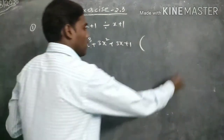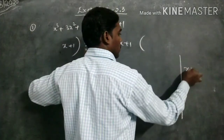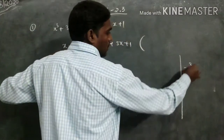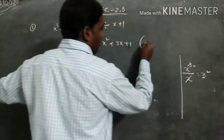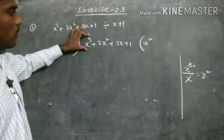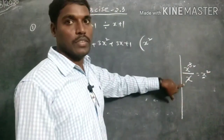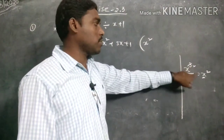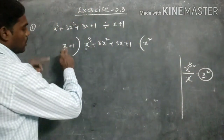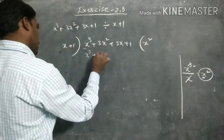So when we do the rough work, what is the first term here? Write down x³. The first term in the divisor is x. This x cancels, leaving x². The ratio between the dividend's first term x³ and divisor's first term x gives us x², so the first quotient term is x².